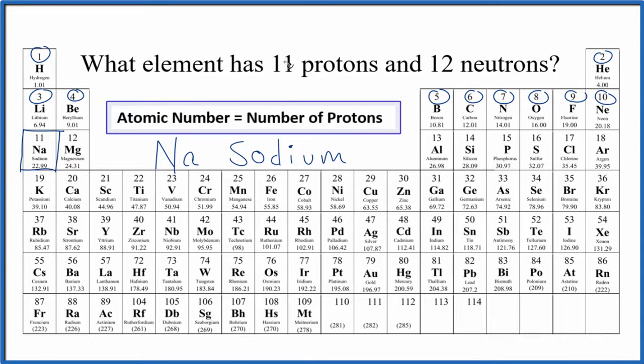So we look at an element, the number of protons, the atomic number, that tells us the identity of the element. Sodium is always going to have 11 protons. Most often it has 12 neutrons, but sometimes sodium atoms can have 11, 10, and those are called isotopes.